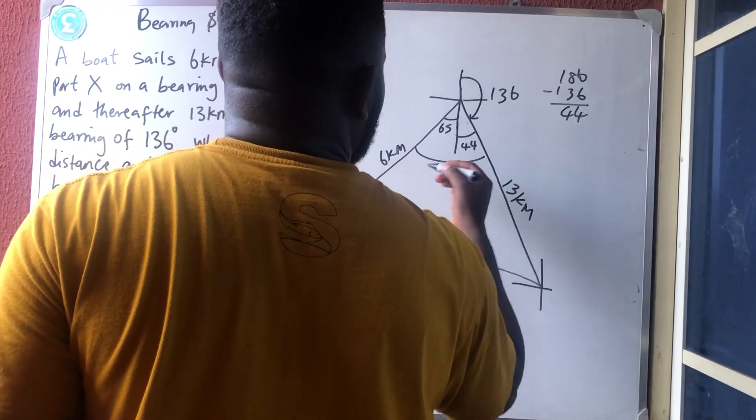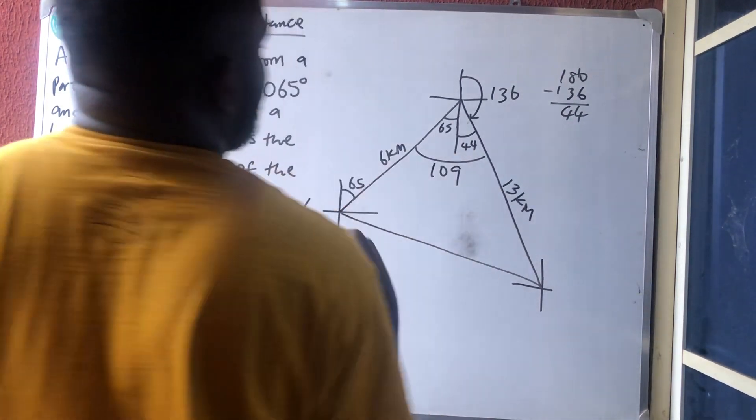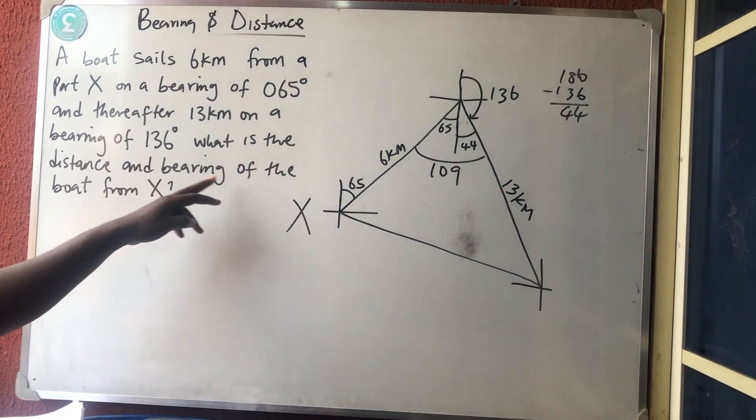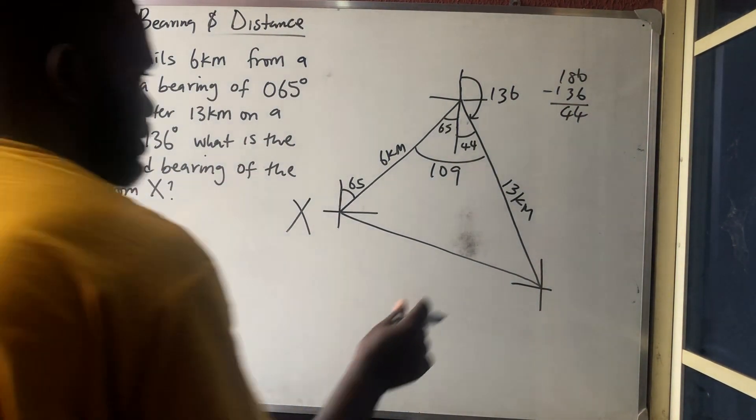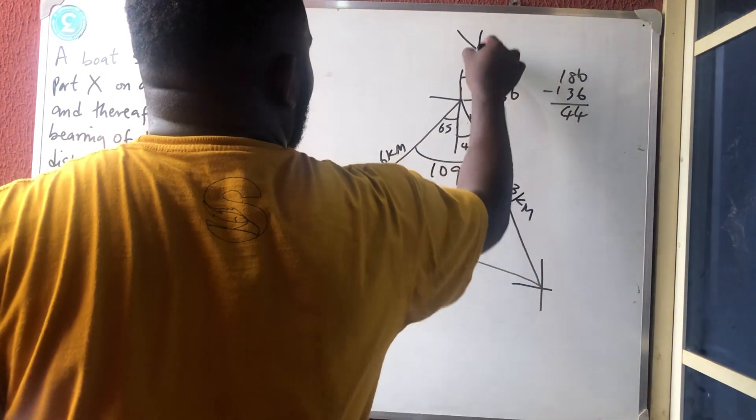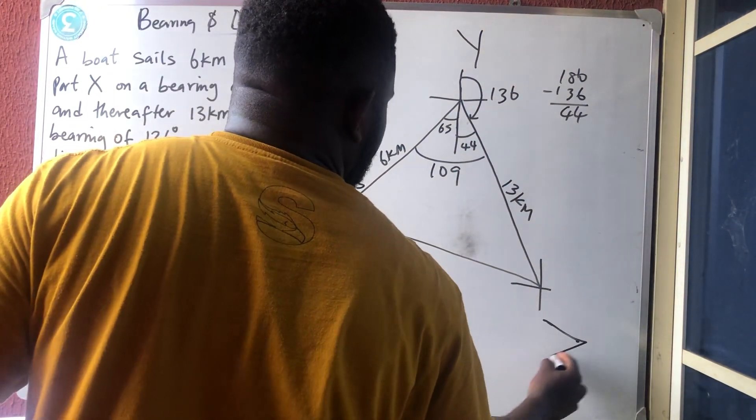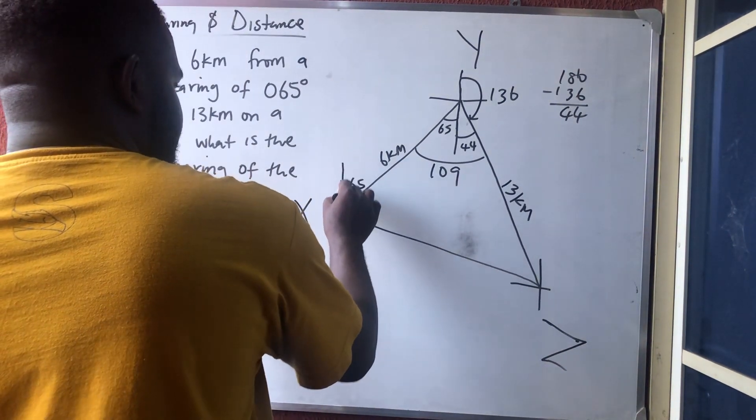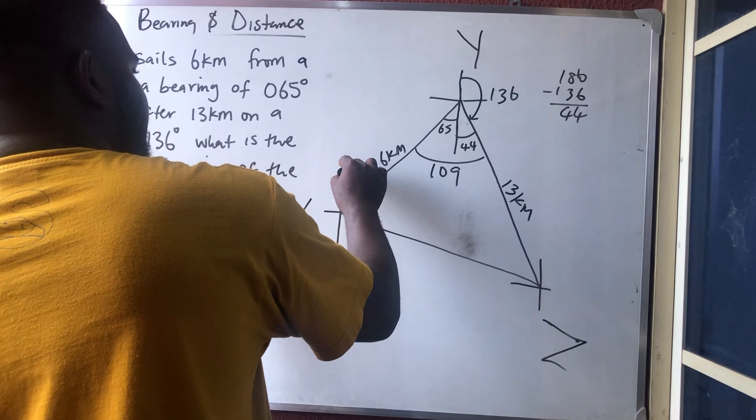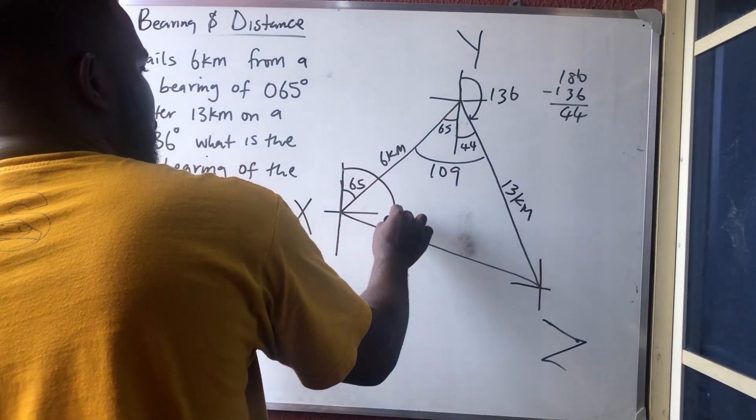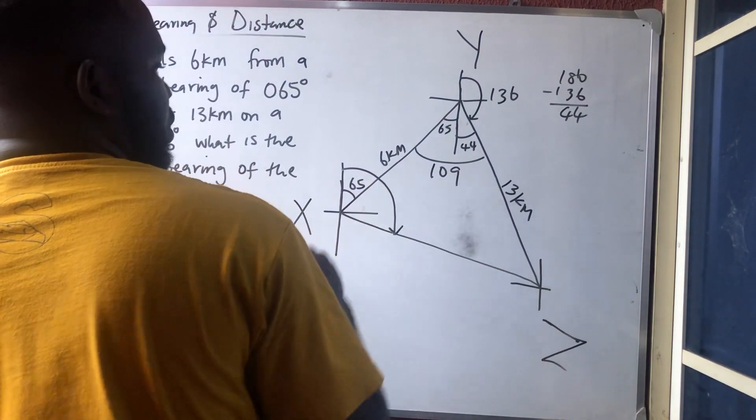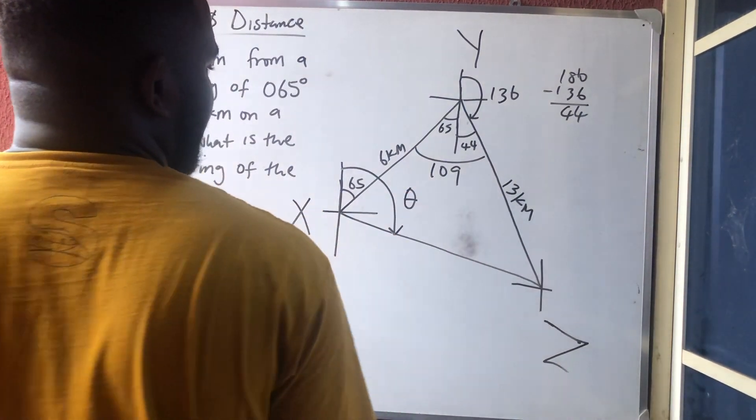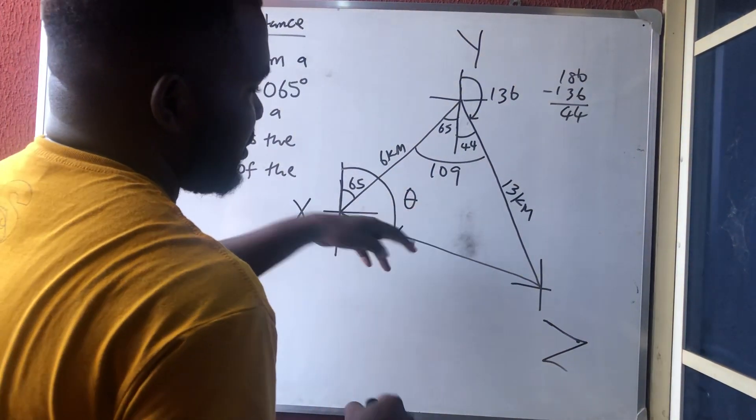You are done. The question said, what is the distance and the bearing from X? This is the last point. We need the bearing of X from the last point, starting from the north till you touch this line. So I need this place. Once I can get this place, I want to say what, 65° plus this place is the bearing.